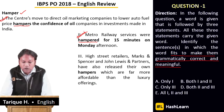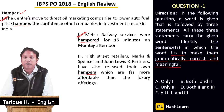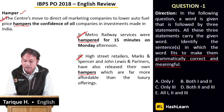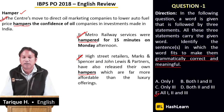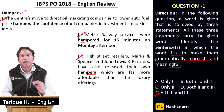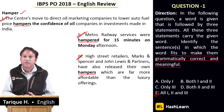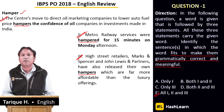The third sentence: 'High street retailers Marks & Spencer's and John Lewis and Partners have also released their own hampers, which are far more affordable than the luxury offerings' — here 'hampers' is used as a gift hamper noun. The word has been used correctly in all three sentences, making the answer E. For this type of question, you need good basic vocabulary — read newspaper articles and magazines to get comfortable with common words used in daily English communication.